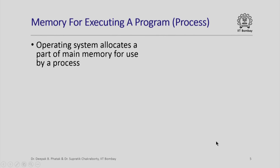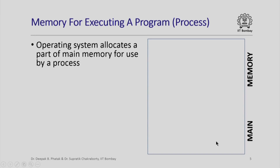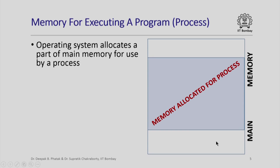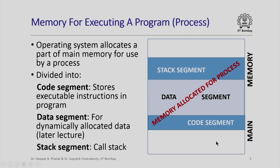We have also seen that when a program is executing — which is what we also called a process — the operating system allocates a part of main memory for use by the process. This part is divided into three segments: the code segment, data segment, and the stack segment. All local variables of all functions in a program are basically allocated space in the stack segment.